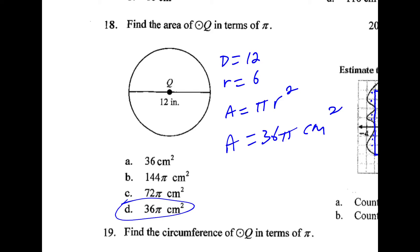For 18, if our diameter is 12, that means our radius is 6. So the area is pi times 6 squared or 36 pi. And we're done.